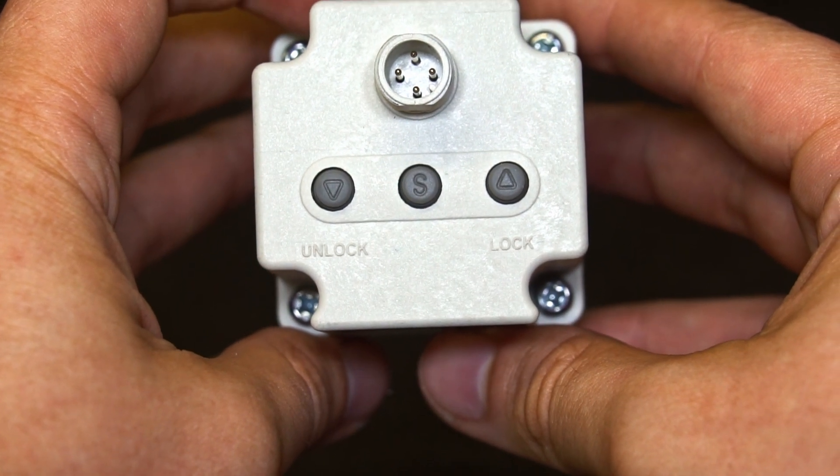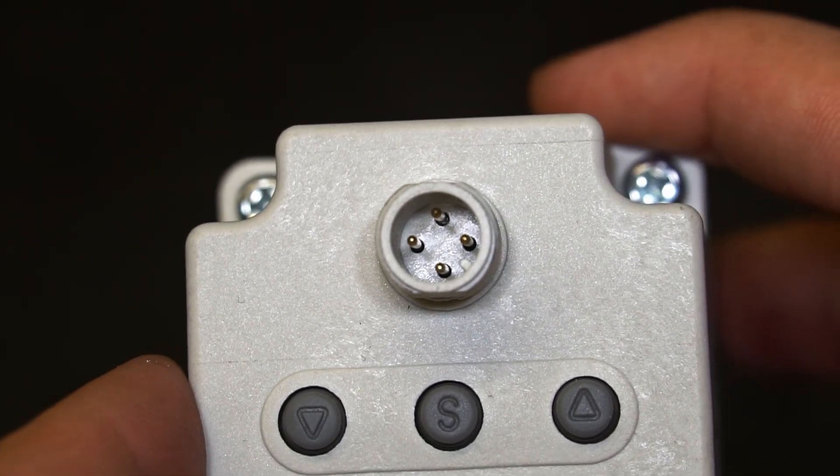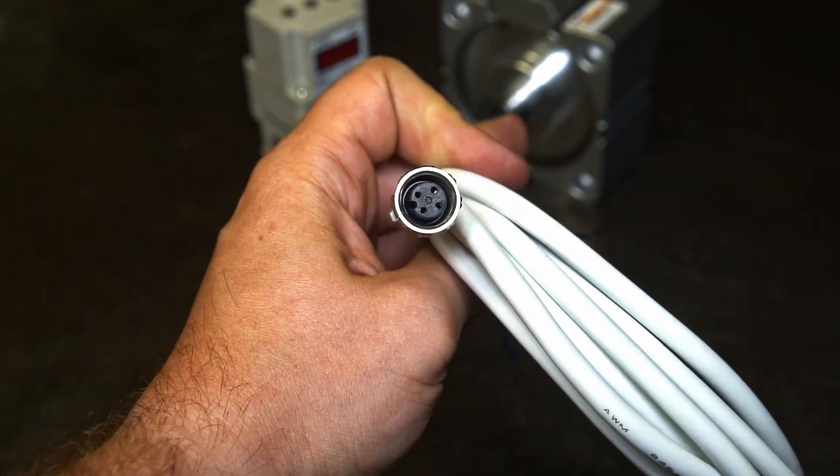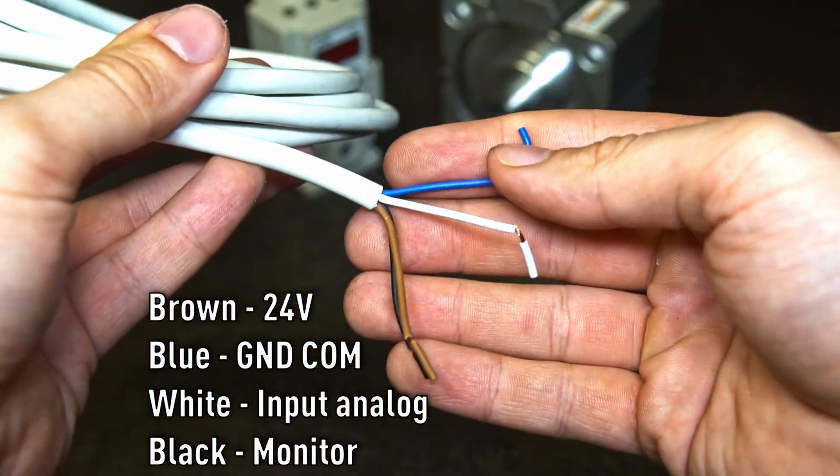It's got also some buttons for advanced users and the electric cable socket. The cable's got four wires in it: brown positive, blue ground, white input analog, and black pressure monitor output.